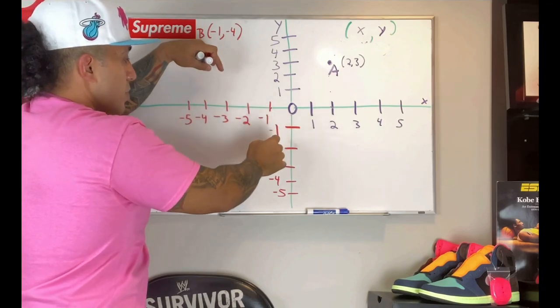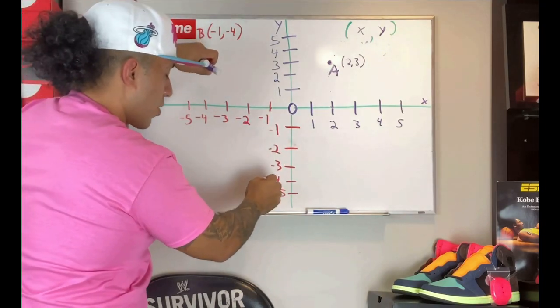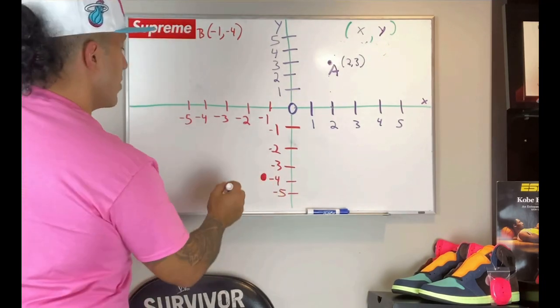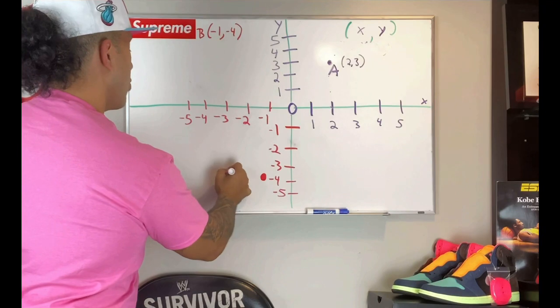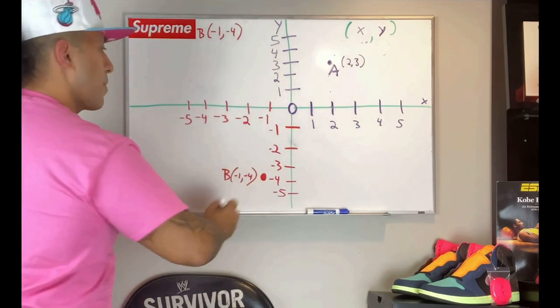It's gonna be: negative 1, negative 2, negative 3, negative 4. And I'm right around here. I'm gonna make a nice big point right there, and this is the location of point B: (-1, -4). So I'm gonna take